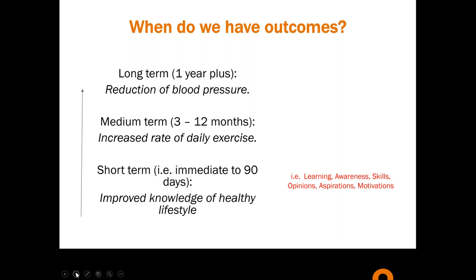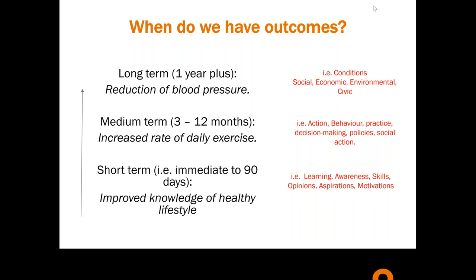Short-term outcomes you'd expect include learning, awareness, skills, opinions, aspirations, motivations. Medium-term ones include behaviour change — though you can have behaviour change overnight, like when seatbelt laws come in. Long-term outcomes like social, economic, environmental, civic conditions take a long time — things like social change can take a generation. But what we're interested in our sector is: what are the realistic short-term outcomes we can identify and measure as a result of our service delivery?